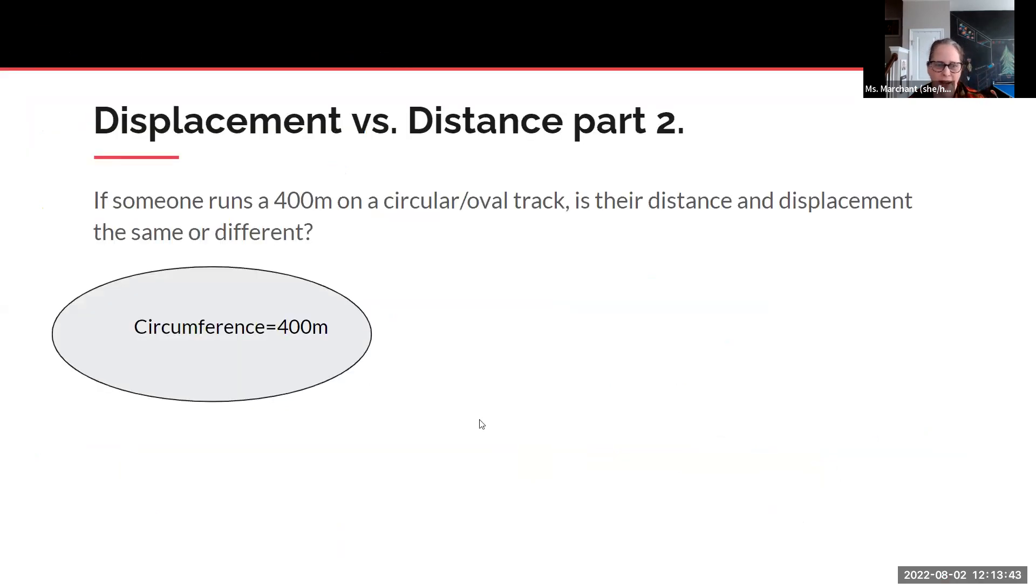So again, displacement and distance. If someone runs on a 400 meter track that's a circular oval track, is their distance and displacement the same or different? So think about it, our circumference is 400 meters on that track. They ran 400 meters if they started and stopped at the same point. Is that path or displacement? They ran 400 meters, that's the path. But their displacement, did they change? Did our distance change? Are we still at the same point? Yes. Their starting and ending positions are the same. So their displacement is zero. So that's really, really careful to think about if they want your scalar quantity or your vector quantity.